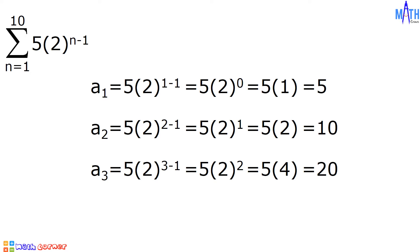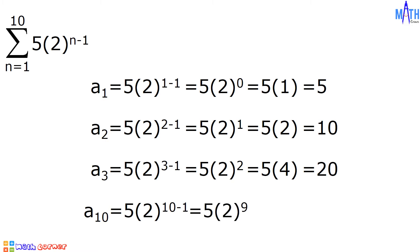To determine the last term, we will substitute 10 to n in the expression. A sub 10 is equal to 5 times 2 raised to 10 minus 1. 10 minus 1 is equal to 9, and we have 5 times 2 raised to 9. 2 raised to 9 is equal to 512, so 5 times 512 is equal to 2,560. The last term, or a sub 10, is equal to 2,560.